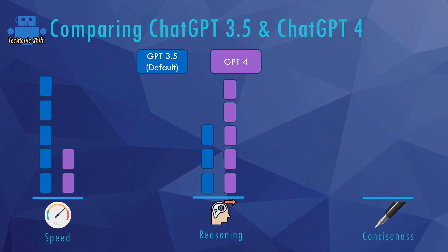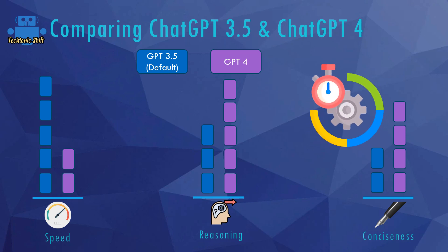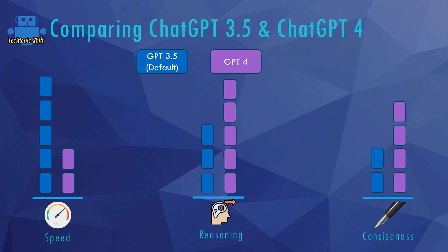The same applies to the Conciseness category. ChatGPT 4 is also way stronger than ChatGPT 3.5 here. Conciseness can simply be described as efficiency — ChatGPT tries to provide the output with all required information using as few words and as few tokens as possible.